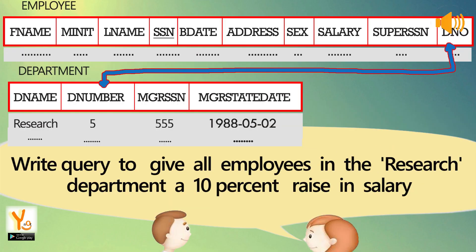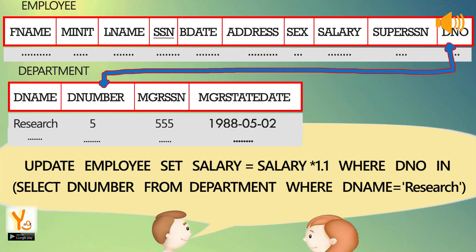Write a query to give all employees in the research department a 10% raise in salary. UPDATE employee SET salary = salary * 1.1 WHERE Dnumber IN (SELECT Dnumber FROM department WHERE Dname = 'Research').